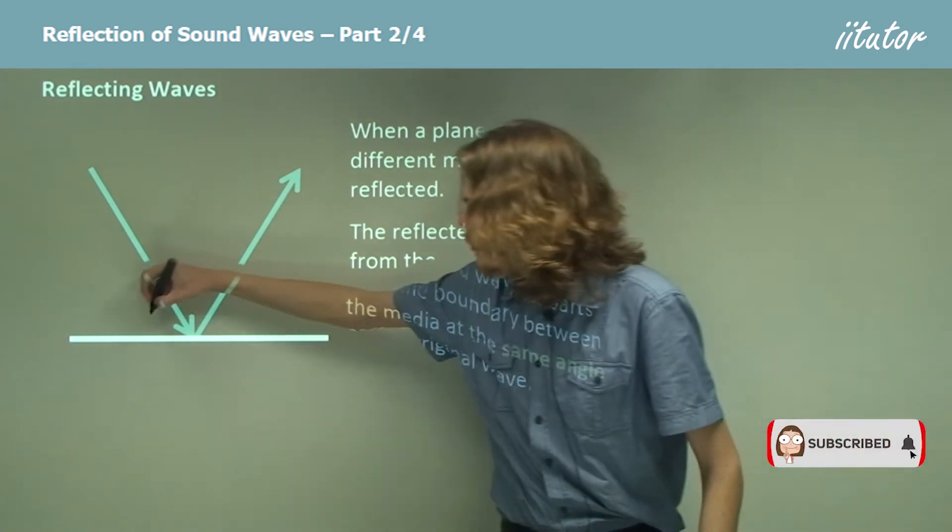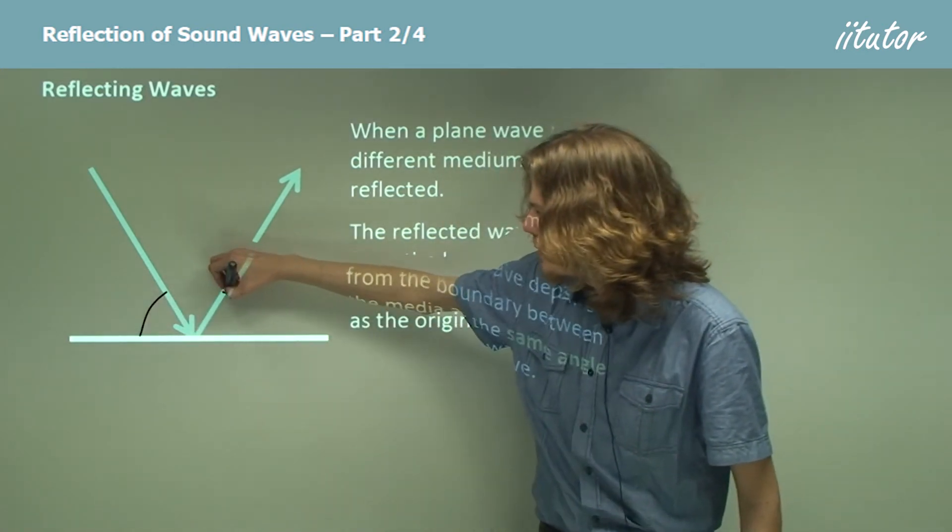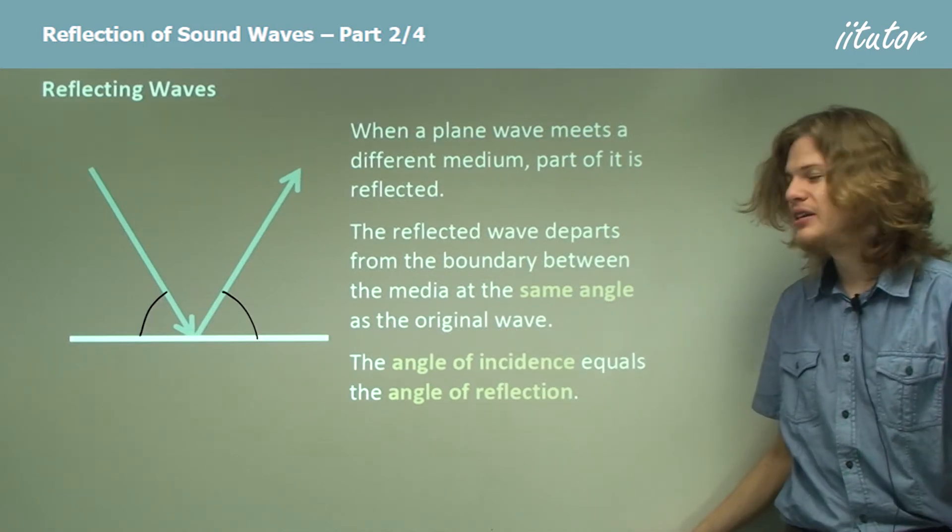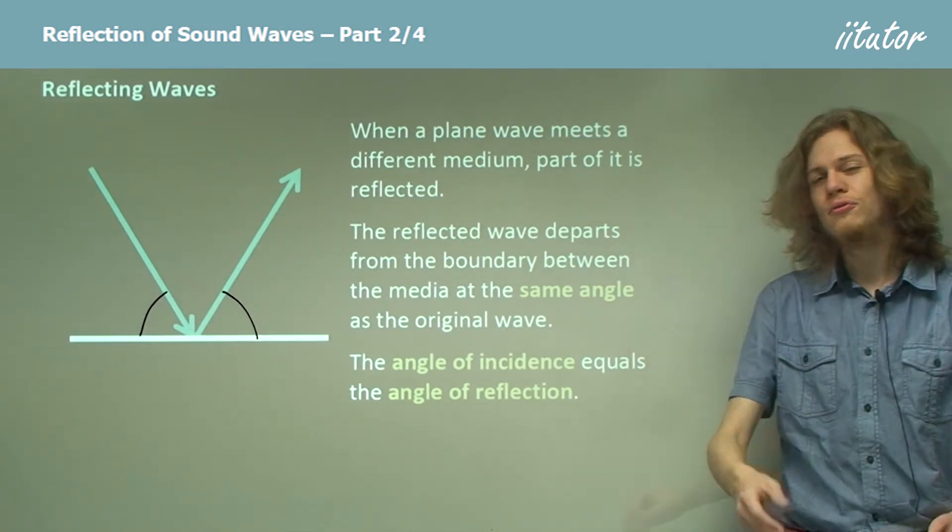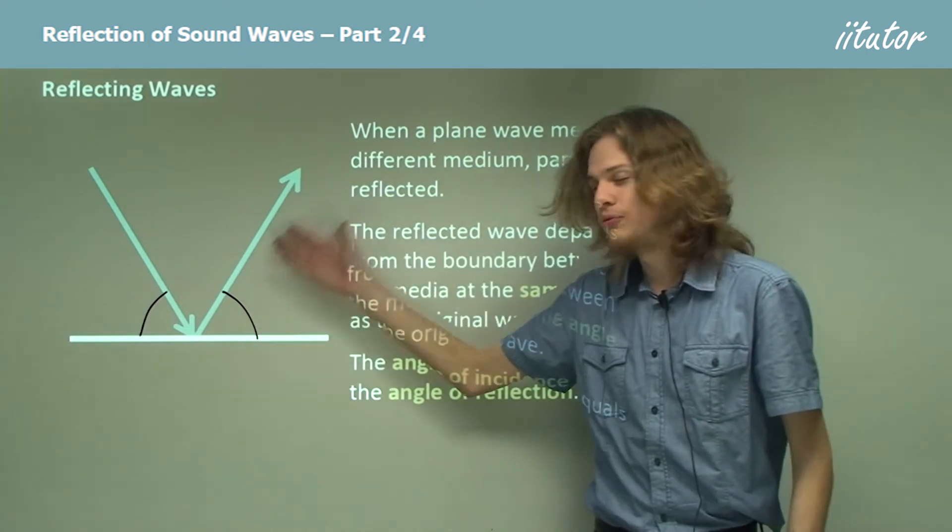That means that this angle over here will be the same as this angle over here. In other words, the angle of incidence, that is the angle of the incident wave, will equal the angle of reflection, that is the angle of the reflected wave.